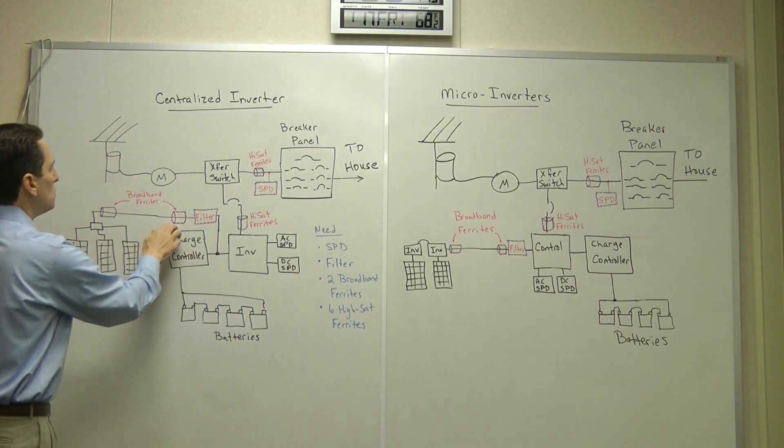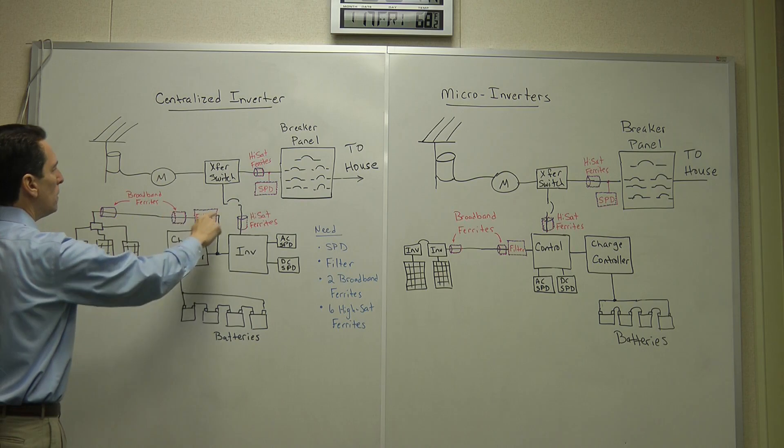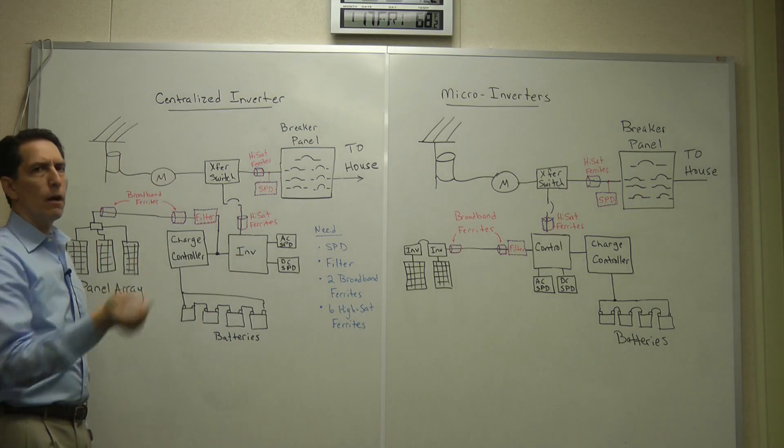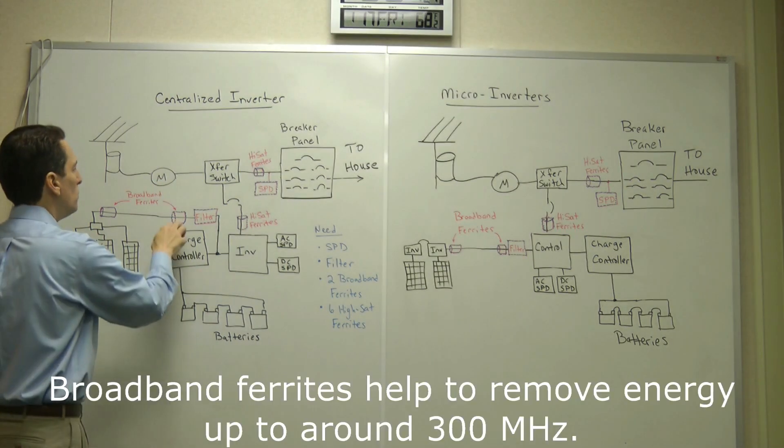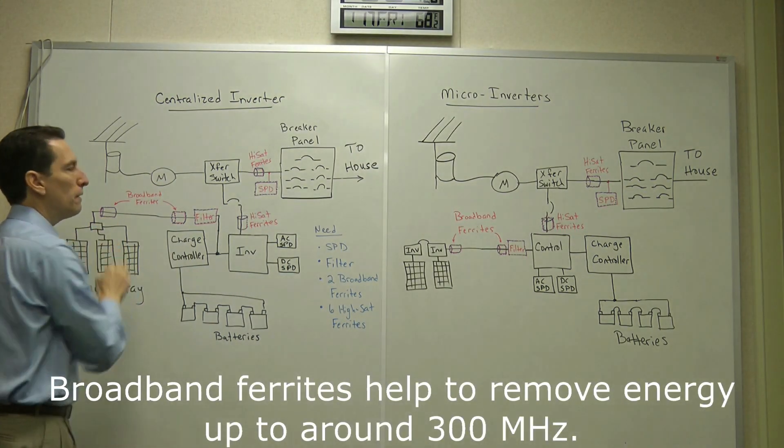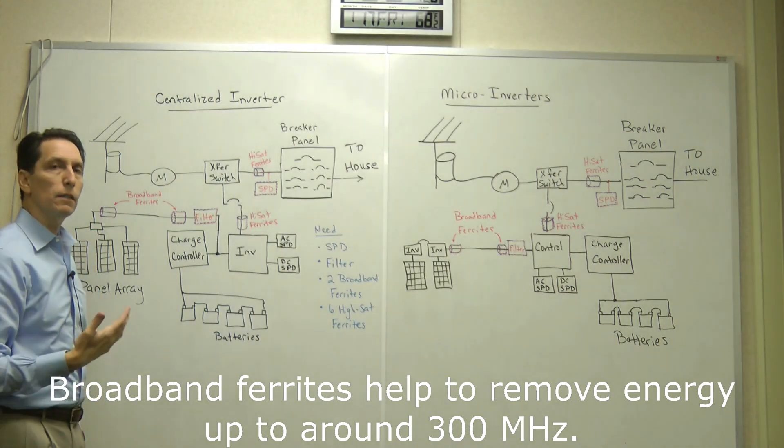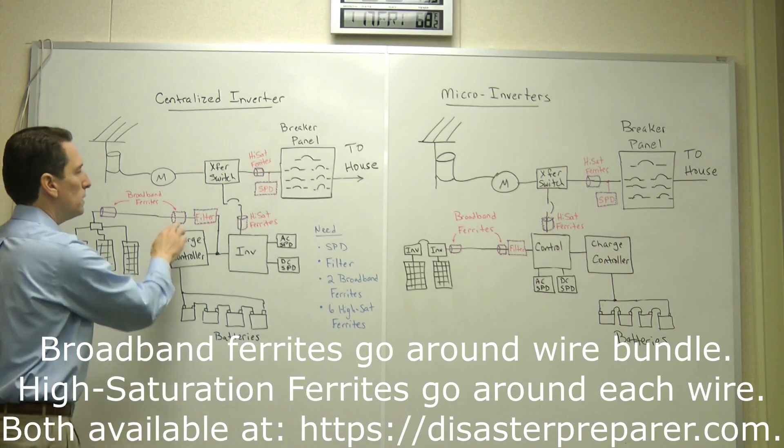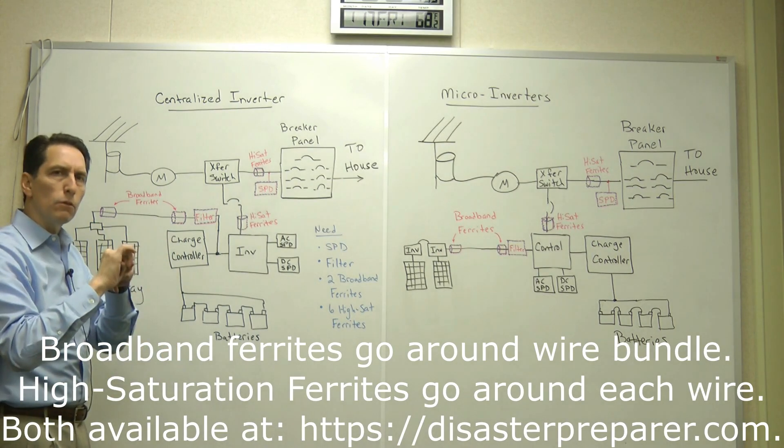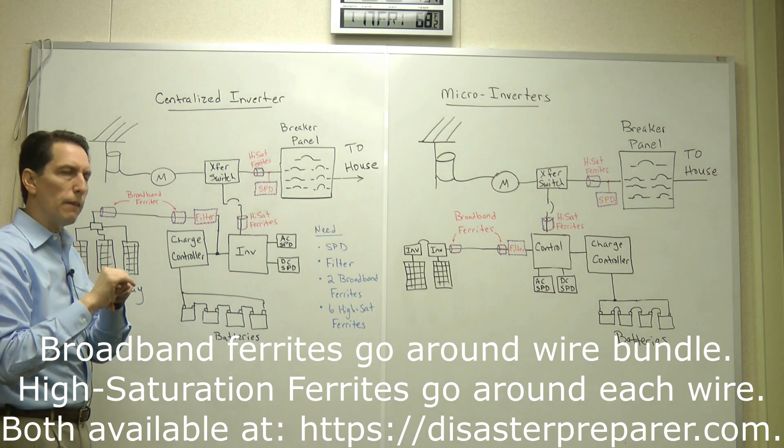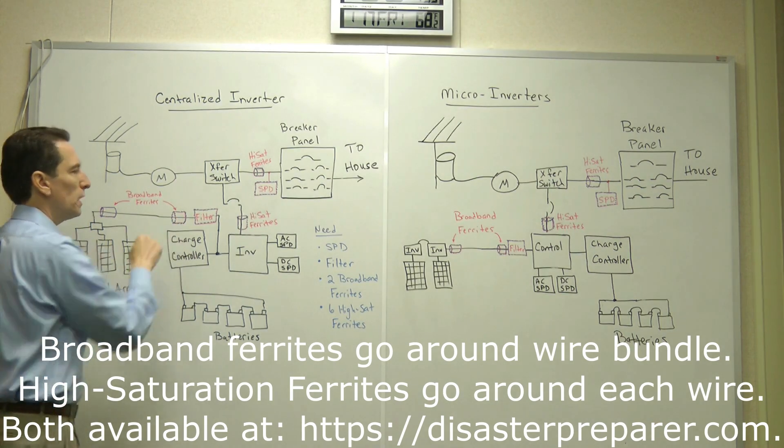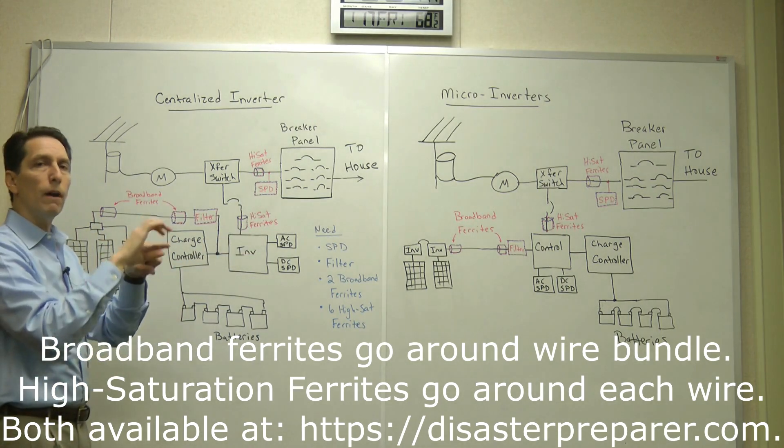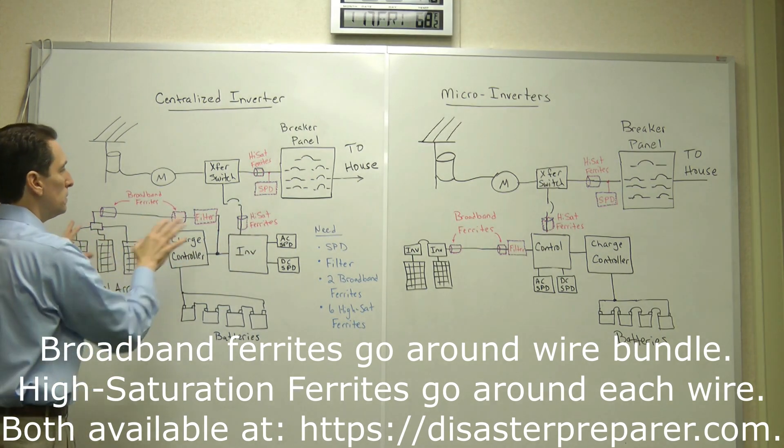And then you could also add for this very long solar panel wire between the solar panels and the inverter, that might be 100 or 200 feet, you can put a broadband ferrite at either end of it. And those ferrites, I do sell at disasterpreparer.com. Just look under broadband ferrites. You might need like a one inch ferrite to go around both of those wires. The plus and minus, you go around it together. So this is a common mode rejection where you go around both wires. That's different than these high saturation ferrites, which go around one ferrite per wire. So distinctly different.